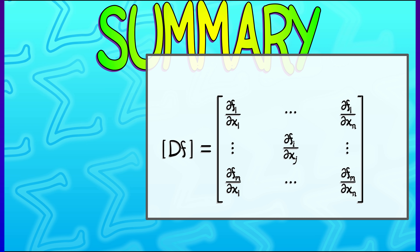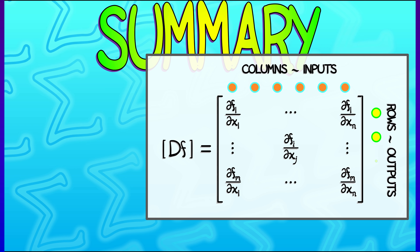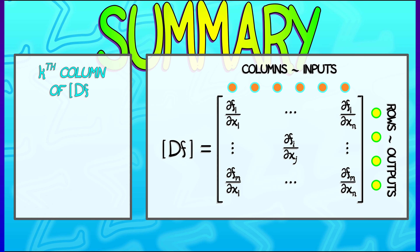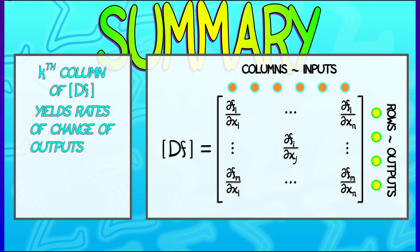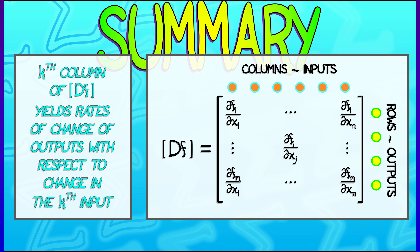To summarize what we've done: we have the derivative as a matrix of partial derivatives, where the columns of this matrix correspond to the inputs and the rows correspond to the outputs.